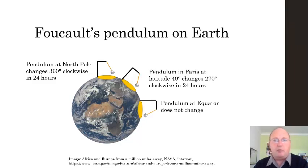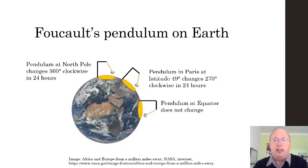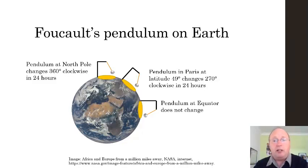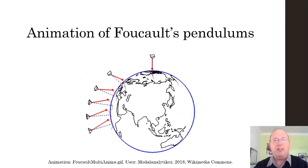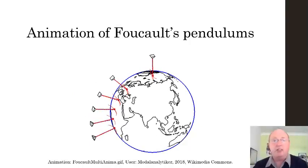Further evidence is shown by the fact that a pendulum changes 360 degrees in one day if it is at the North Pole or the South Pole. At Paris, where Foucault did his experiments, it changes only 270 degrees in 24 hours, since it is at a latitude of 49 degrees north of the equator. A pendulum on the equator does not change its direction at all. Here's an animation showing Foucault's pendulums at different latitudes.